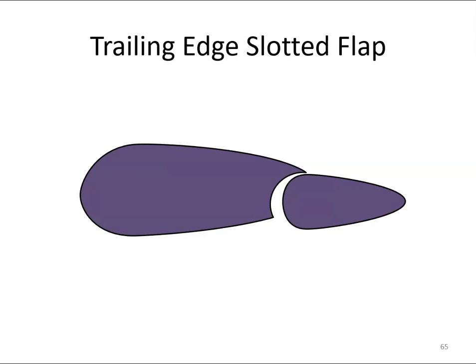The trailing edge slotted flap is similar to the plain flap, but when lowered it forms a slot between the trailing edge of the wing section and the leading edge of the flap.